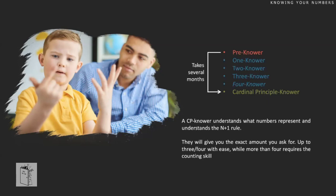Once they reach four, something weird happens — something clicks. We call this the cardinal principle: they suddenly realize that the words they know represent a certain quantity. Then suddenly they know all the words, know exactly how much everything is, and learn to count very quickly. But those first three to four number words are really hard and take a while — and that's where my research takes place. It's the same range we see across all the other animals.